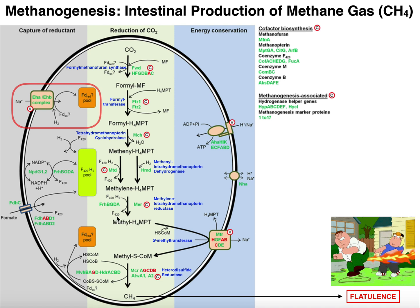This reaction is going to occur in the membrane of the bacterial cell and will utilize a sodium pump to provide some of the energy. The methyl group is transferred onto coenzyme M, and so now we have methyl-S-CoM. CoM has a thiol group — that's why this S is here. The methyl group is now on a sulfur rather than a nitrogen. We also get subsequent pumping out of a sodium ion, which helps maintain the sodium gradient.